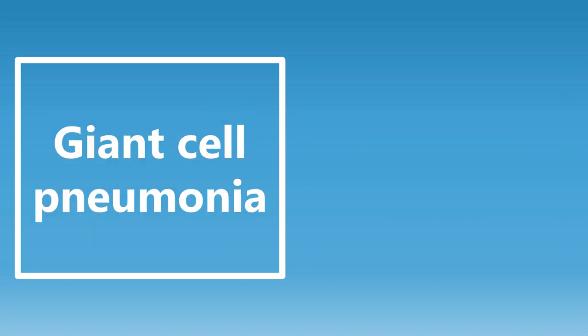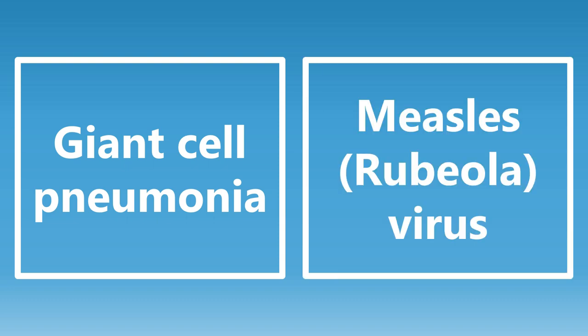Giant cell pneumonia — if you see any mention of this, you want to be thinking about measles, also known as the rubeola virus. This is called giant cell pneumonia because there are large phagocytic cells that infect the alveoli of the lungs. If you see that association, be thinking about measles, and remember measles is also called rubeola, not to be confused with rubella.